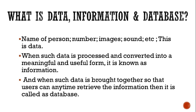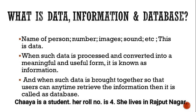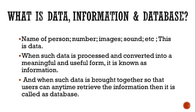If I write like Chaya is a student in our school, her roll number is 4 and she lives in Rajput Nagar, then you might understand that it is information about Chaya. So when the data is processed and converted into a meaningful and useful form, it is known as information. Data is collected and it becomes information.